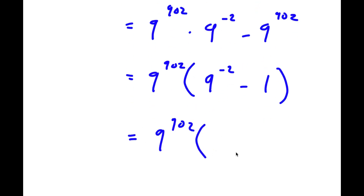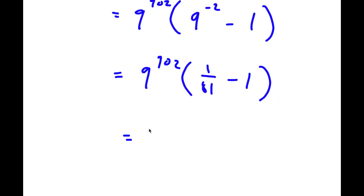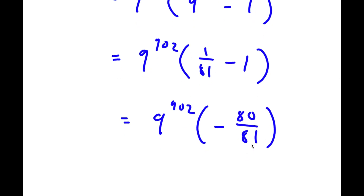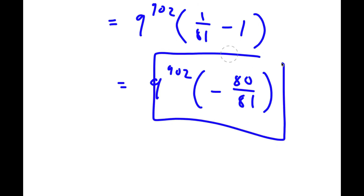This is the same thing as 9 to the power of 902 times — since 9 to the power of negative 2 is the same thing as 1 over 81 — I have 1 over 81 minus 1, which equals negative 80 over 81. So this is my answer; this is another way of writing the answer.